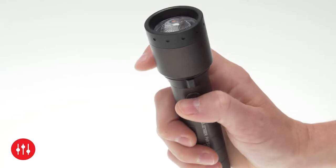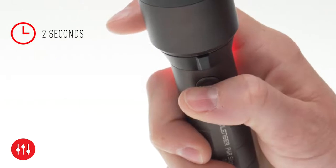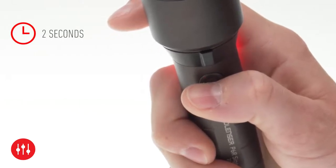When you want to select a specific light function, press and hold the switch for 2 seconds. It will flash red twice to confirm.